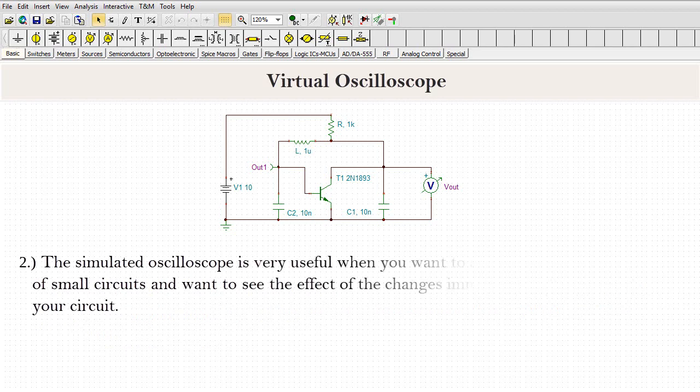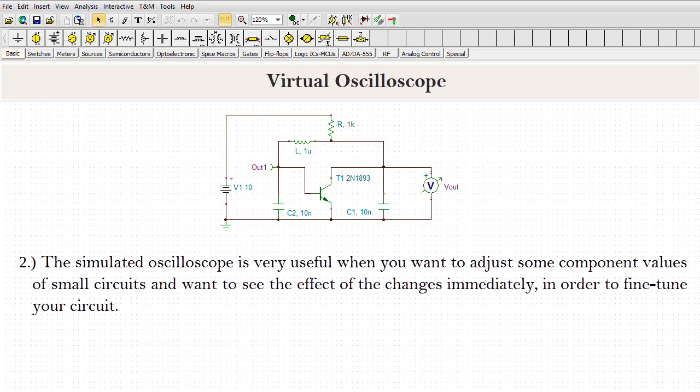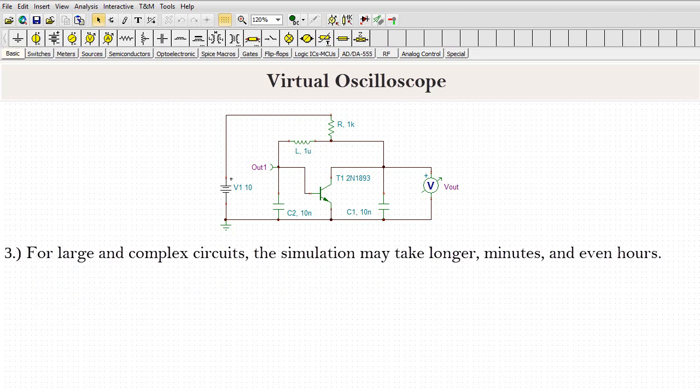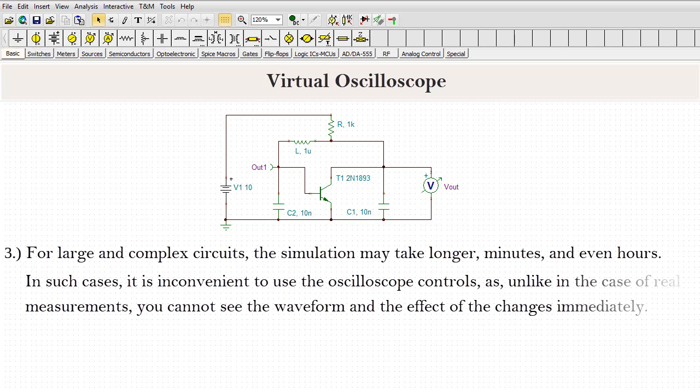The simulated oscilloscope is very useful when you want to adjust some component values of small circuits and want to see the effect of the changes immediately in order to fine-tune your circuit. For large and complex circuits, the simulation may take longer, minutes and even hours.